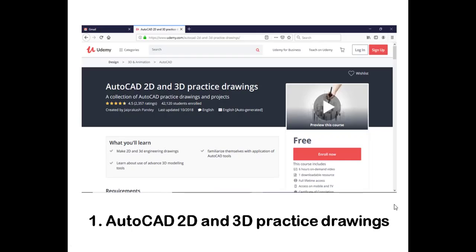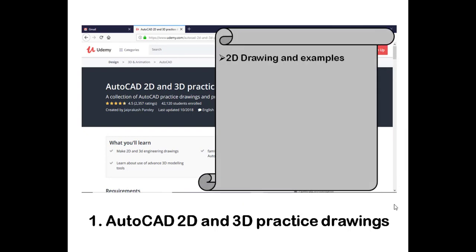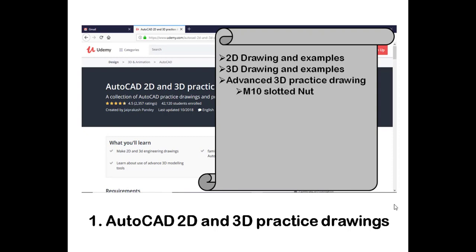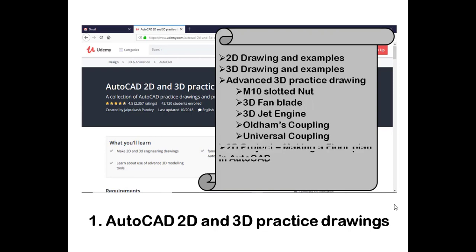The first course is AutoCAD 2D and 3D practice drawing, offered by Udemy. The syllabus includes 2D drawing with around 8 to 9 examples, 3D drawing with examples, and advanced 3D practice drawings covering an M10 slotted nut 3D, fan blade 3D, jet engine, old-time coupling, and universal coupling. Projects include making a floor plan in AutoCAD in 2D and making a Coke bottle in 3D.